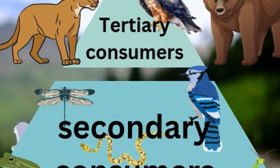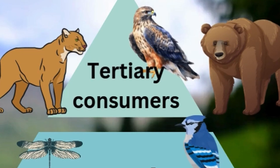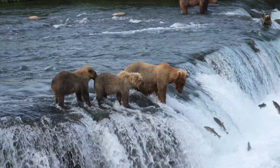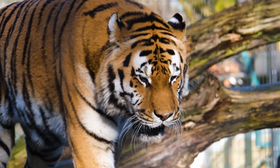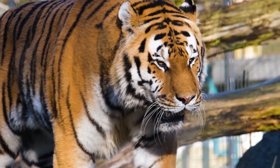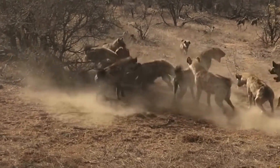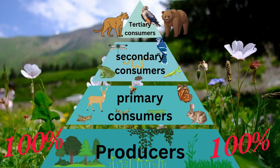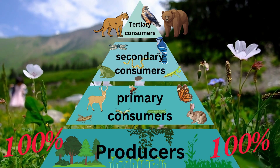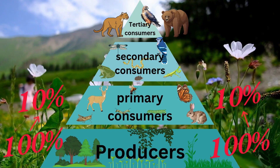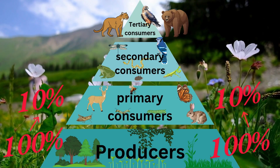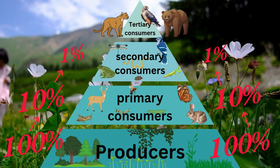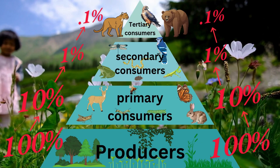The very top of the pyramid are the tertiary consumers. These are the organisms of an ecosystem that consume anything below them — the apex predators. The only thing that's going to consume a tertiary consumer is another tertiary consumer. If we start with 100% of an ecosystem's energy at the producer level, only around 10% of it is passed to the primary consumers, and only 10% of that is then passed to the secondary level, and only about 10% of that is then passed to the tertiary consumers.